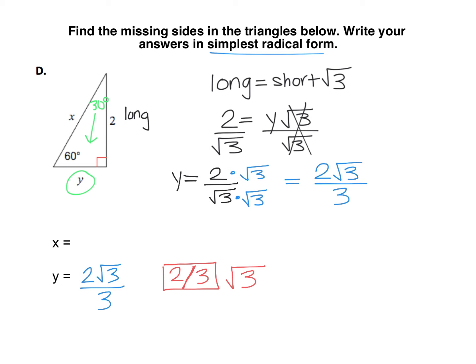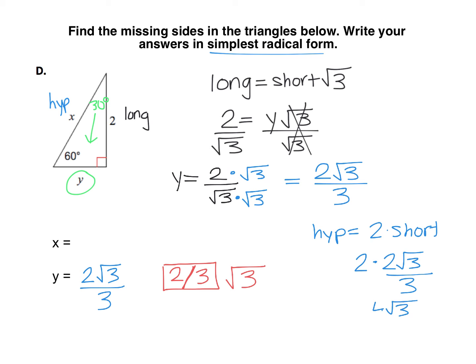Next I need to find my x, which is the hypotenuse. Remember, the hypotenuse is just 2 times the short leg. So here that's 2 times 2 root 3 over 3. If we just take 2 times 2, that's 4 root 3 over 3.